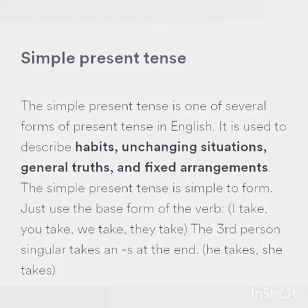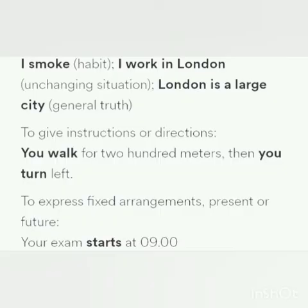It is used to express habits, general truths, repeated actions or unchanging situations, emotions and wishes. For example, 'I smoke' — it is a habit. 'I work in London' — it is an unchanging situation. 'London is a large city' — it is a general truth.